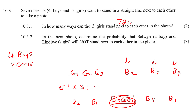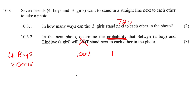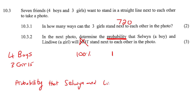Moving on to the next question. In the next photo, determine the probability that Selwyn, who is a boy, and Lindiwe, who is a girl, will not stand next to each other. Whenever a question has the words 'at least' or 'will not,' what we do is the complete opposite. We know that all probability adds up to 100%, or the fraction of one. So we're going to find the probability that Selwyn and Lindiwe will sit together.